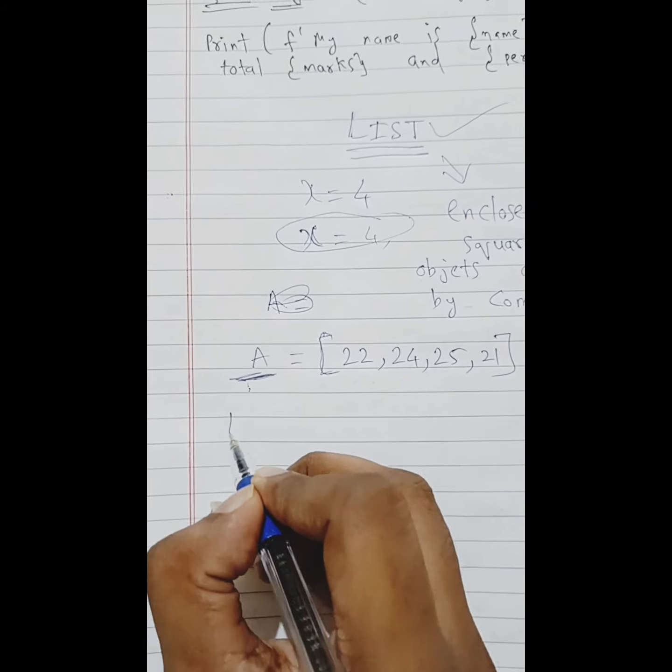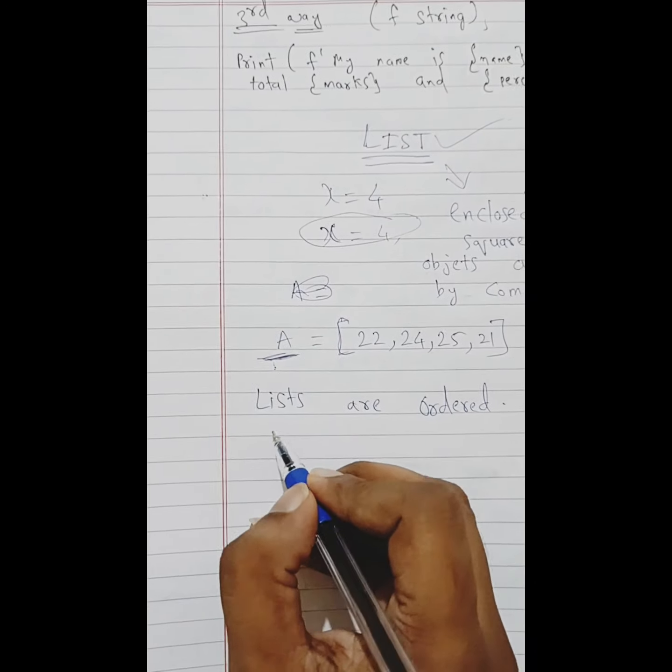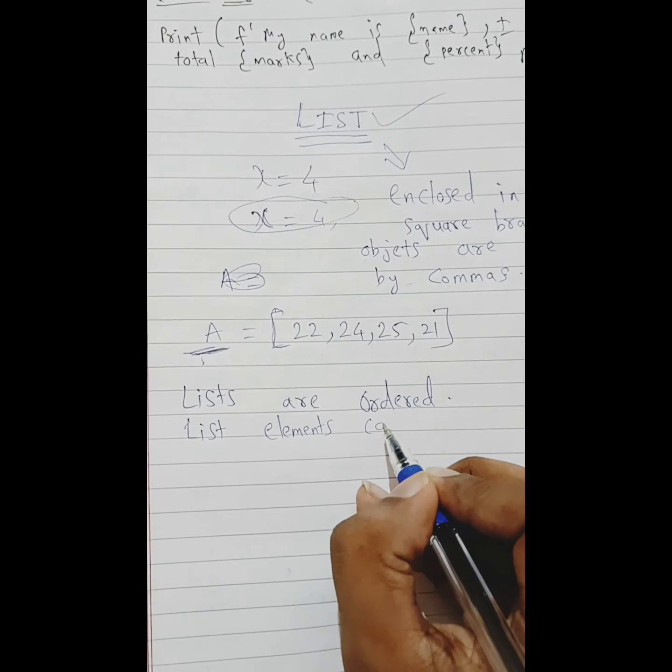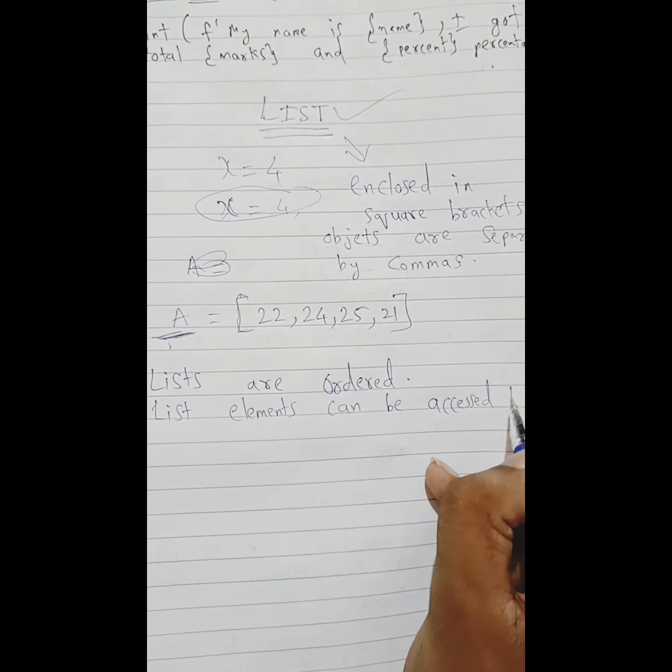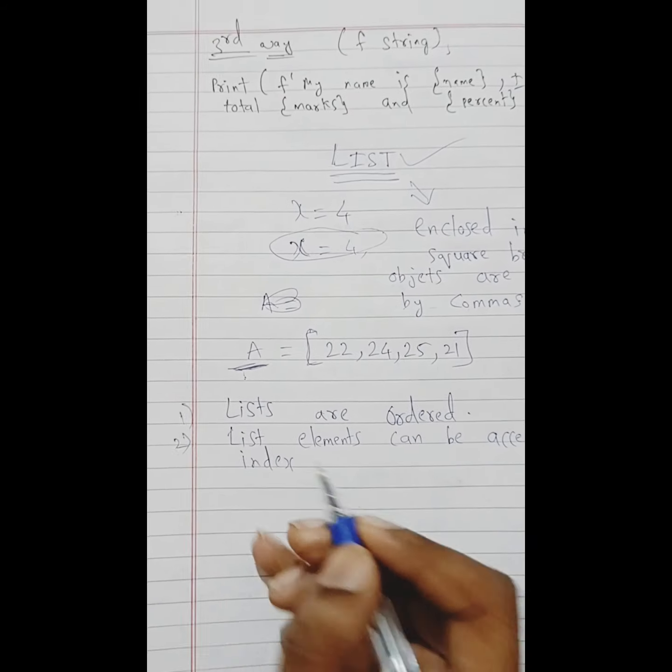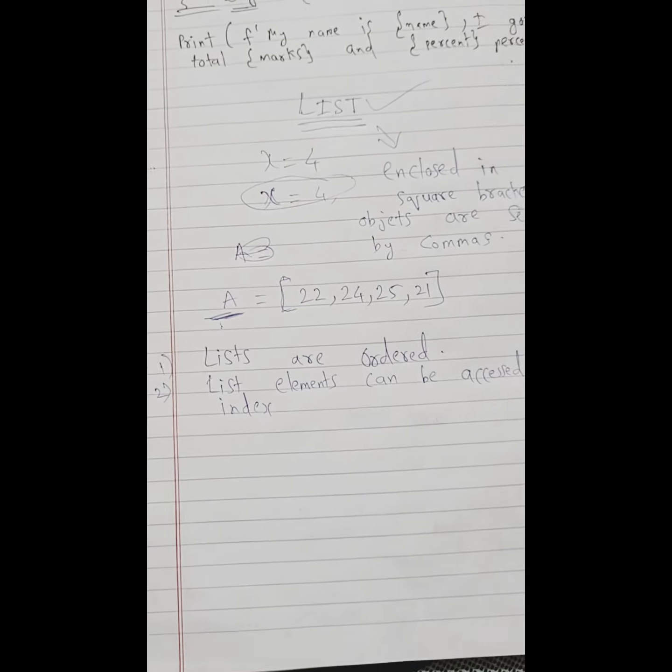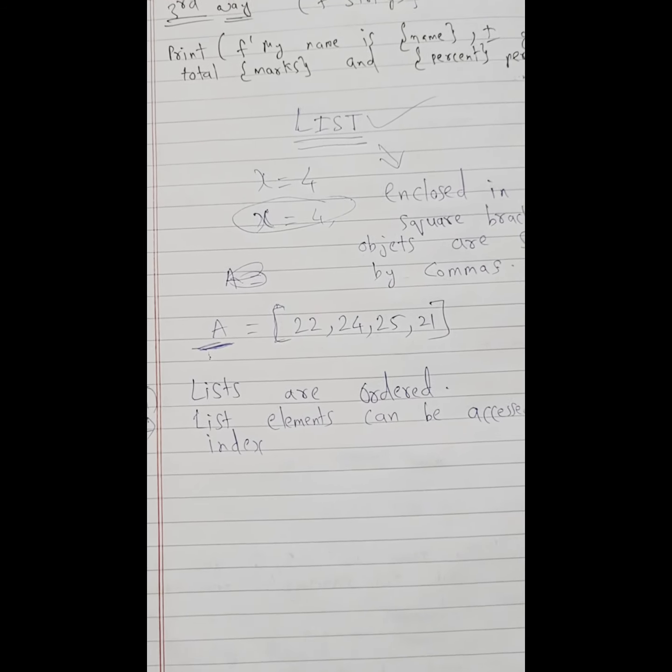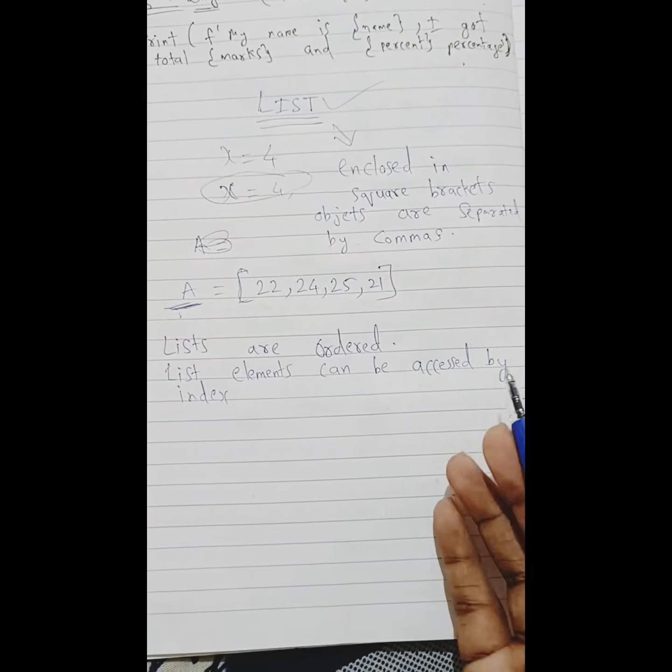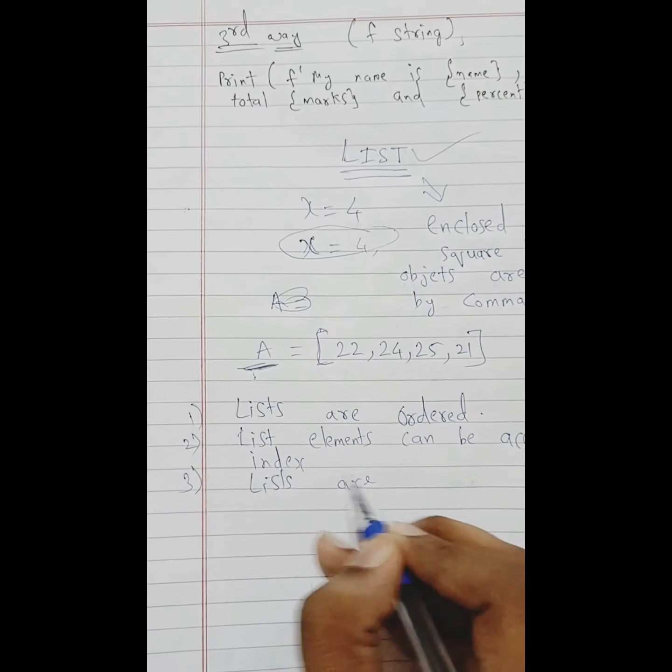Here I will give you more information. Three important points with respect to lists. First thing, lists are ordered. List elements can be accessed by index. Index is nothing but - you can see in a normal way, like a chapter portion. Chapter 1, 2 - these numbers are the index of the chapter. Directly we can access through index.